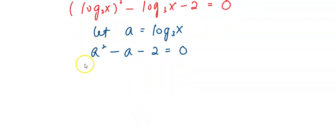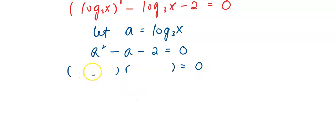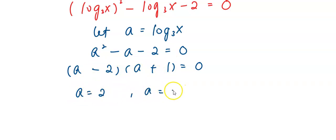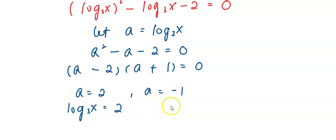You can see now my equation is actually a quadratic equation. Using the method of factorizing this quadratic form, I get a equals 2 and a equals negative 1. Then we substitute back: a as log base 3 of x equals 2.